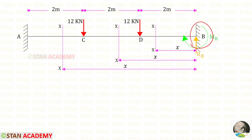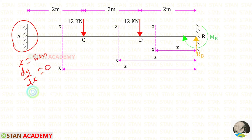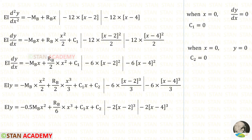In the fixed support there will be no slope and deflection. So when X is 0, the slope dy/dx will be 0, and the deflection y will be 0. At point A there is also a fixed support. So when X is 6 meter, the slope dy/dx will be 0, and the deflection y will be 0. We just saw that when X is 0, dy/dx will be 0.